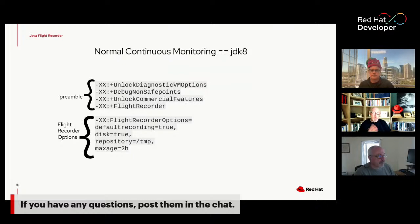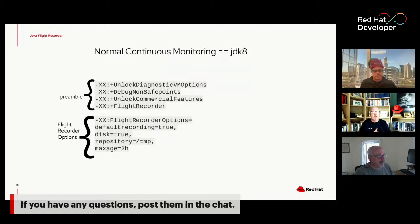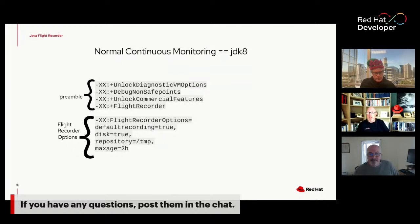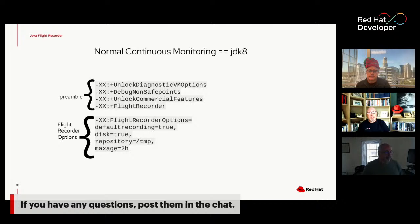Some things in JDK 8 you don't need after JDK 8: unlock diagnostic VM options, debug non-safe points, and unlock commercial features. Oracle was originally going to charge for Flight Recorder as a commercial feature in the Oracle JDK, but it eventually became part of the standard JDK and was contributed back to the OpenJDK. It does go back to Sun originally.